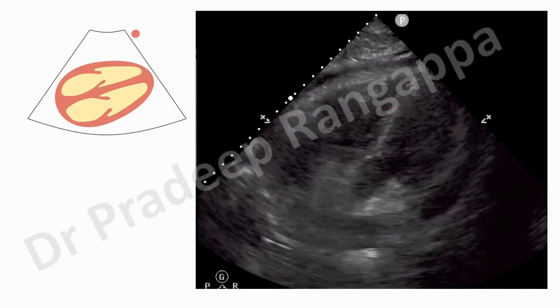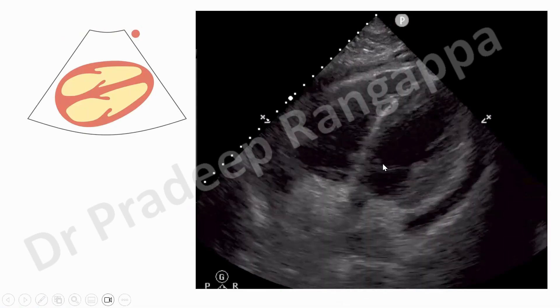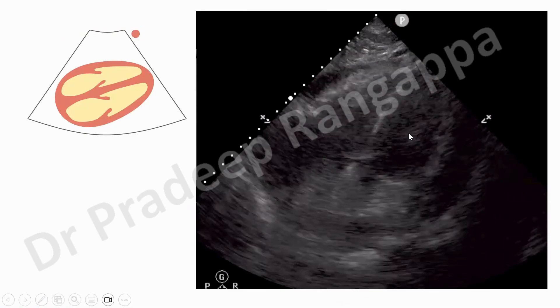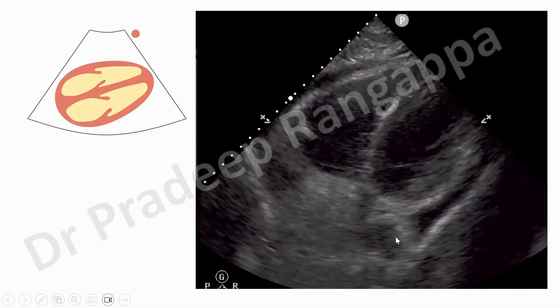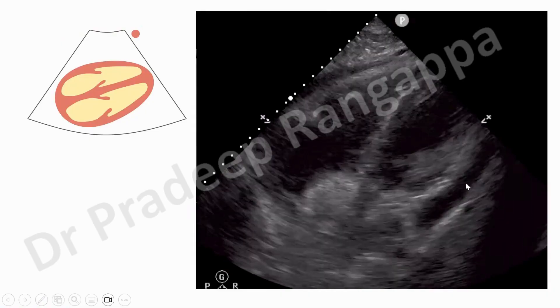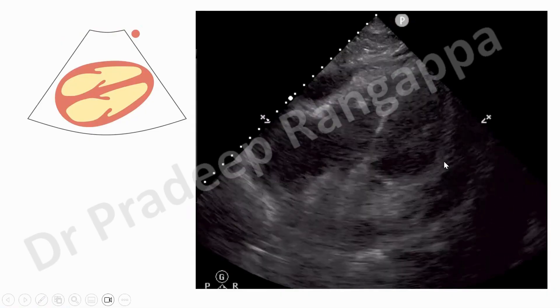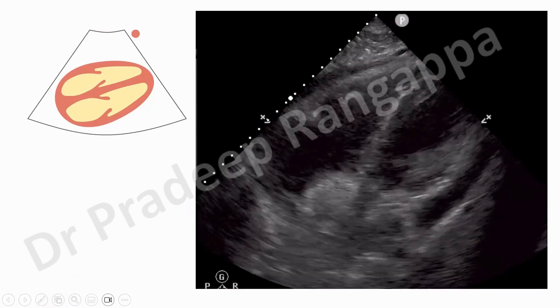This is the subcostal view. You will see the heart with LV, RV, LA, and RA. This is the best view to look for reversible causes like tamponade. For example, in a patient with pericardial effusion and tamponade in the subcostal view, you can see collapse of the LA with pericardial effusion and compression — that is a cardiac tamponade you would see in the subcostal view.